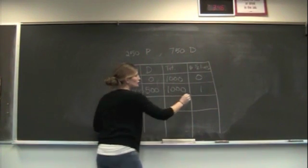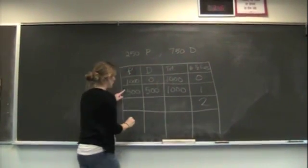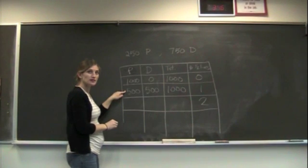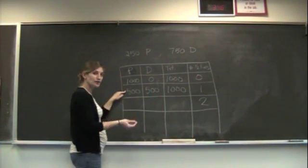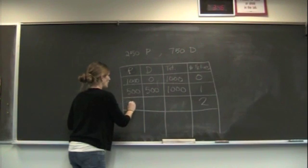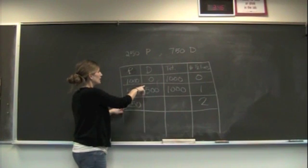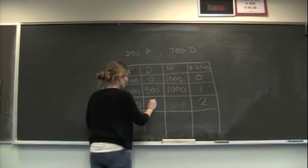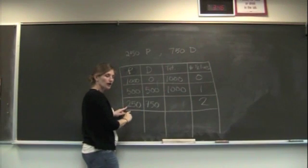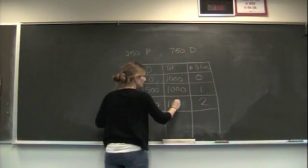After two half-lives, the 500 parent atoms get divided by 2. We now have 250. The other 250 is going to get added into the daughter, so we have 750. If we add these up together, there's still 1,000.